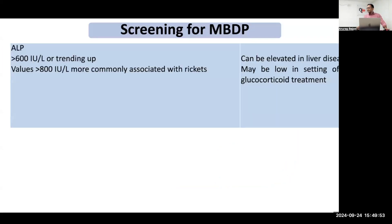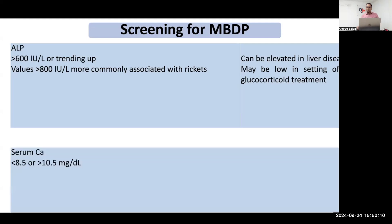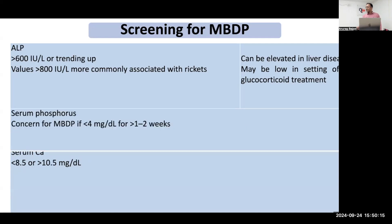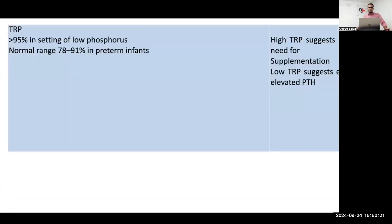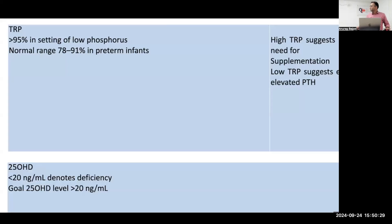Regarding screening: initial labs at four to six weeks include calcium, phosphorus, and ALP. ALP more than 600 or trending upward is a sign of MBD of prematurity; ALP more than 800 is usually associated with rickets. Calcium less than 8.5 or more than 10.5 is significant. Serum phosphorus less than 4 over one to two weeks is significant. TRP more than 95% is seen in low phosphorus. The normal range for preterm is 78 to 91%. Vitamin D deficiency is defined as less than 20, and the treatment goal is to keep it above 20.